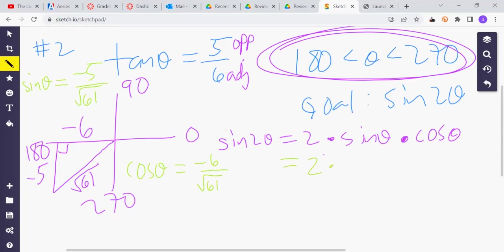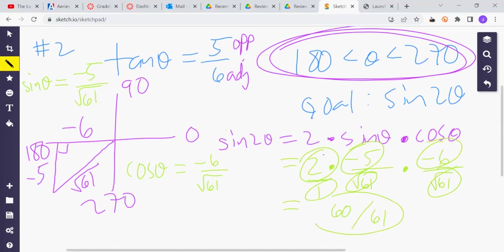So this is 2 times sine times cosine. We don't need a calculator for this one because, put a 1 under the 2. Multiply all the top numbers. That will give you positive 60. Multiply all the bottom numbers. It gives you 61, which is why this is the final answer for number 2 from the review.